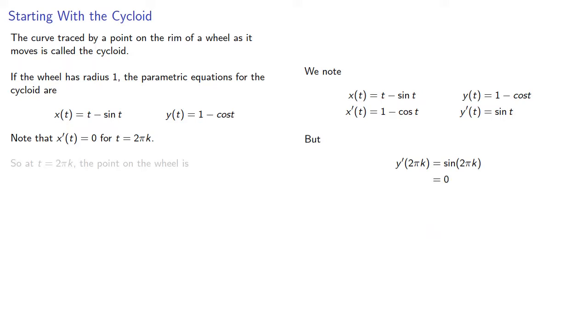So at t equal to any multiple of 2π, the point on the wheel is not moving horizontally since the derivative of x is 0. It's also not moving vertically since the derivative of y is equal to 0. And this means the point isn't moving at all.